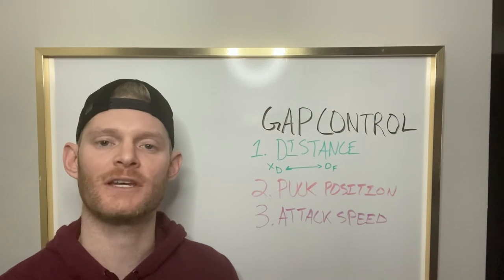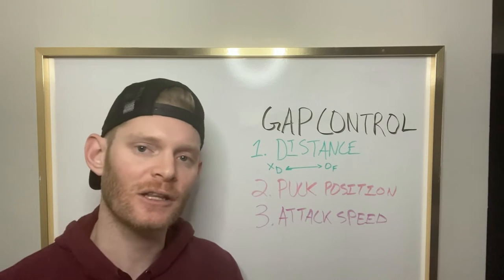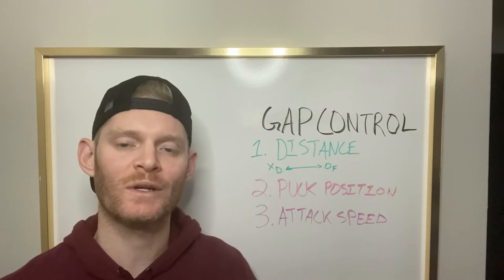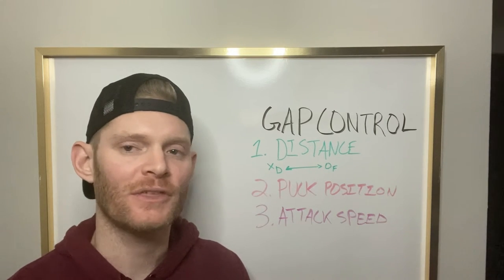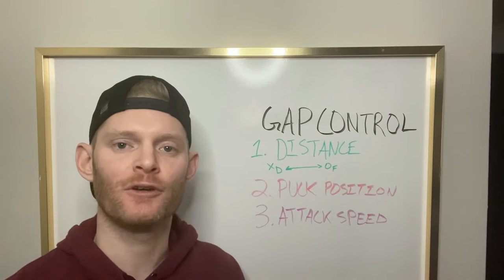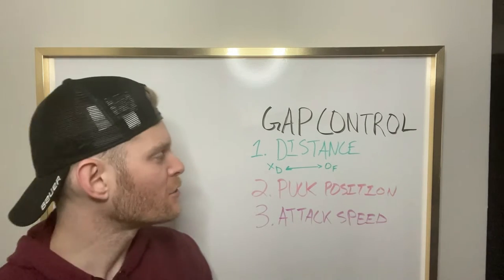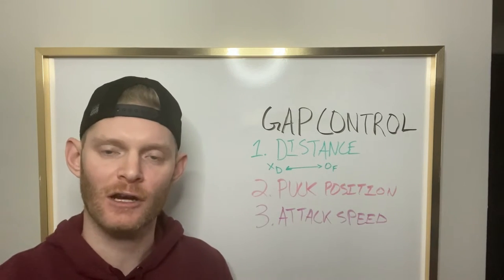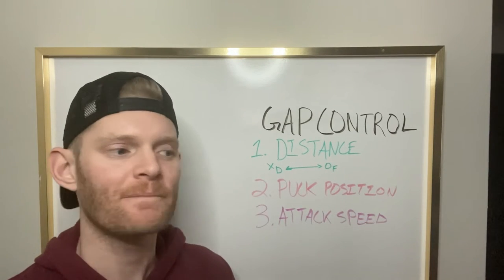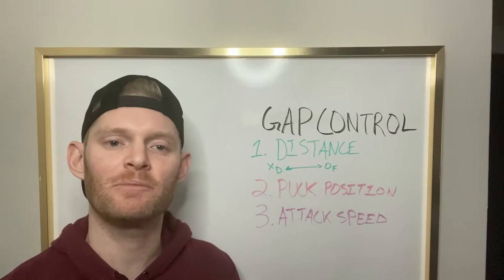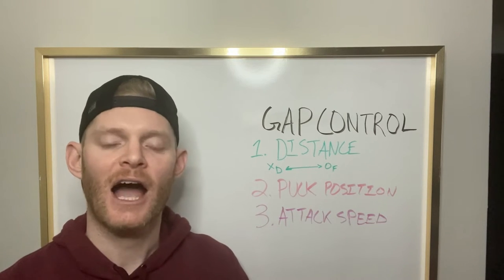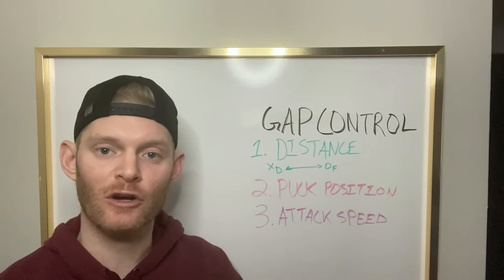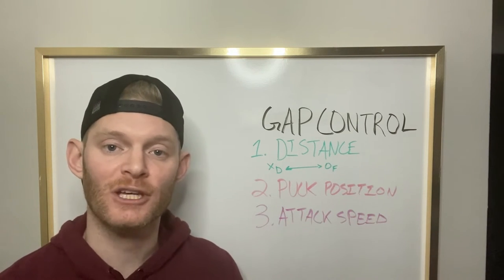Our second aspect of gap control is puck position on the ice. Typically when defensemen set their gaps, it's once the puck clears our blue line and moves into the neutral zone or the attacking zone. When we think about breakouts or when the other team is regrouping, we want our defensemen to hustle up the ice to get within that distance to the nearest forward. Puck position is always going to be key because it dictates how the defensemen transition to set their gaps and how aggressively they can move up the ice.